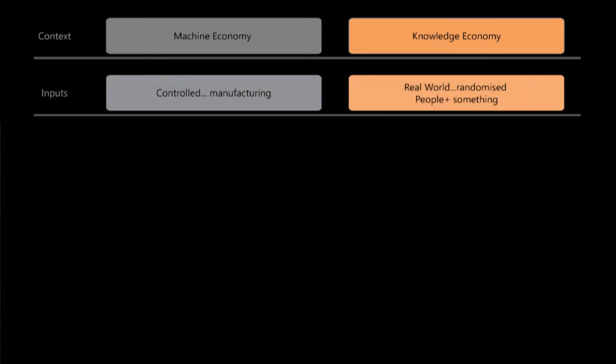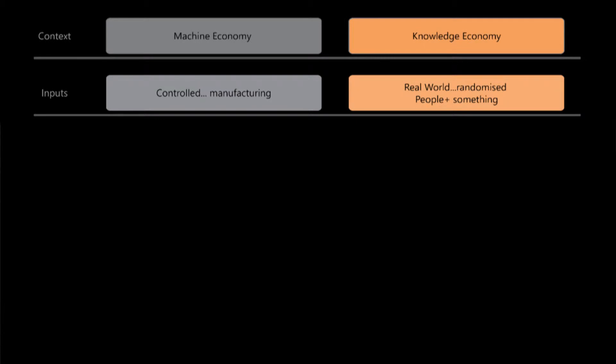The differences start with the inputs for the two. In the machine economy it was a very controlled environment where there were a strict set of rules around inputs and outputs — manufacturing. The knowledge economy works like the real world. Processes and inputs are randomised depending on who and what is available.